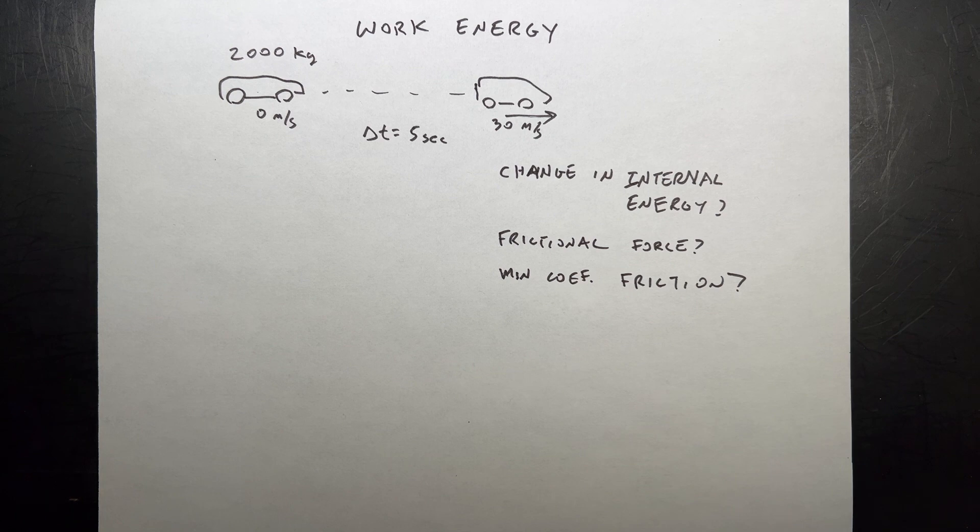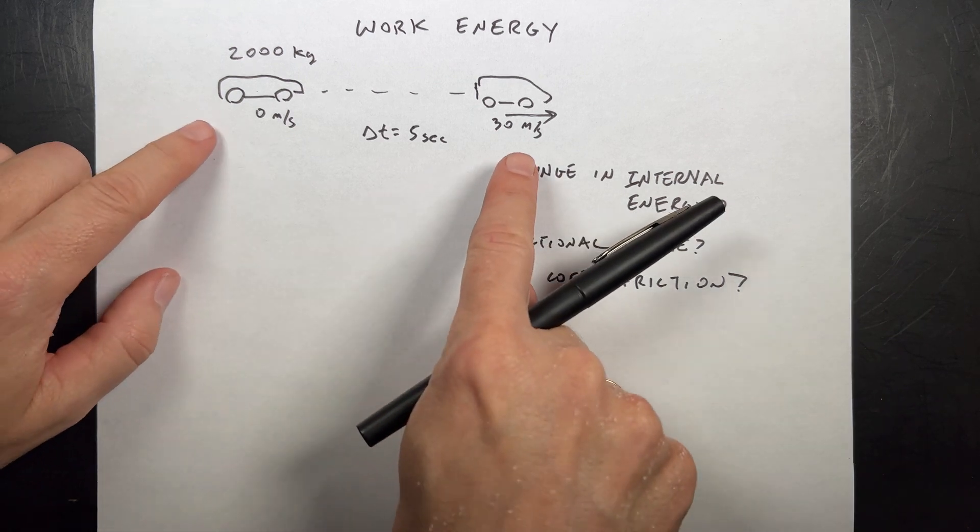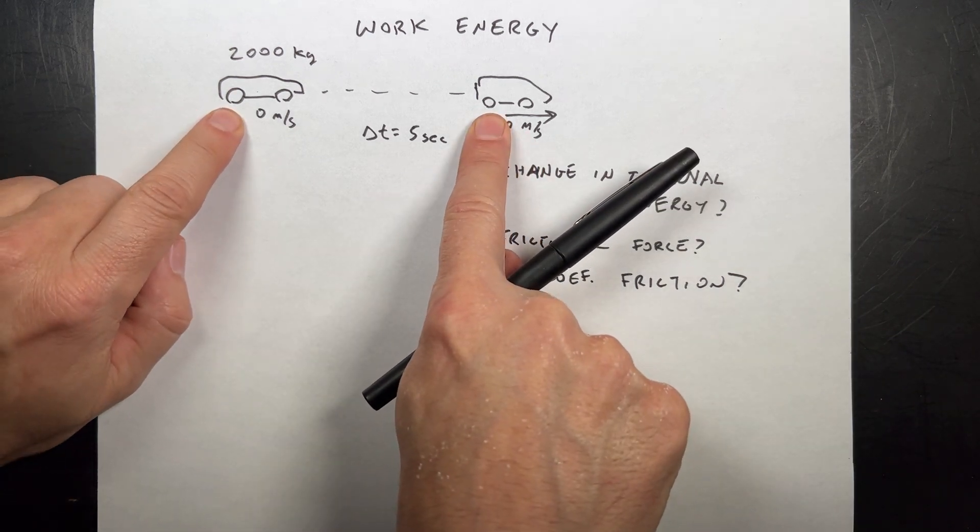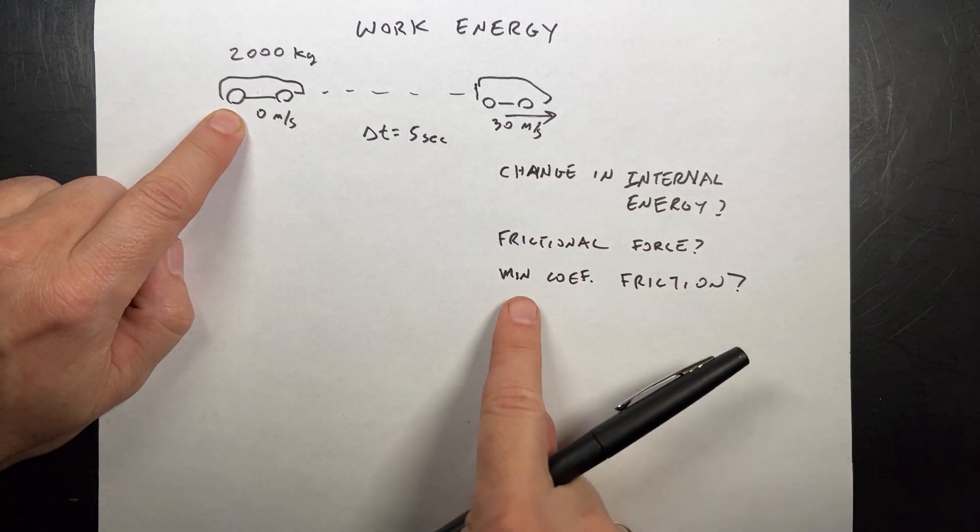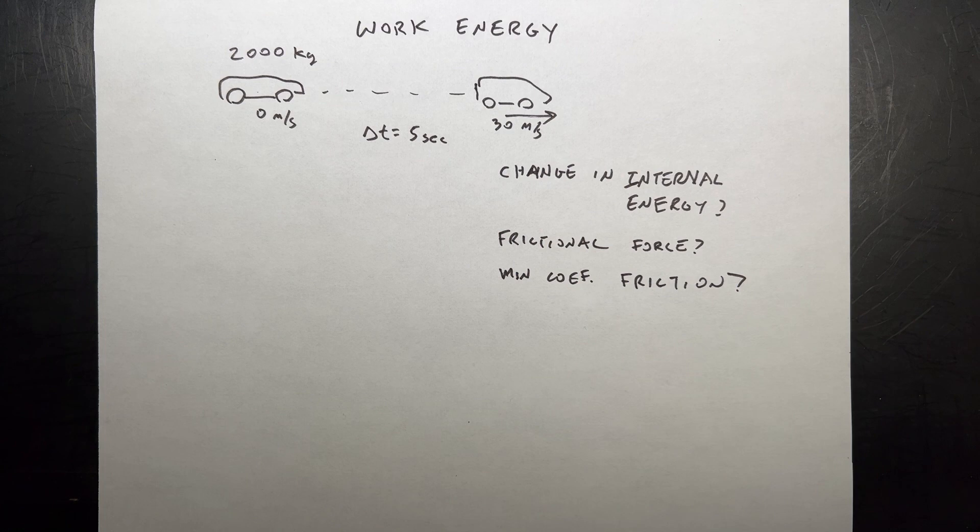Or it could be a battery, right? It could be electric car. What's the frictional force between the wheels and the road? And then what's the minimum coefficient of friction? So we're going to solve all those things.